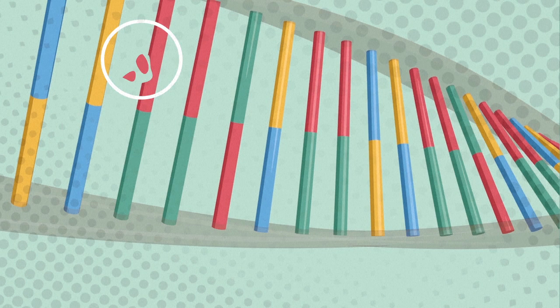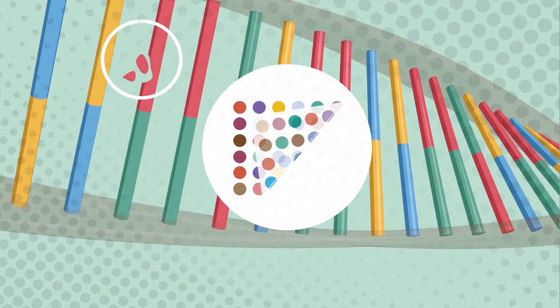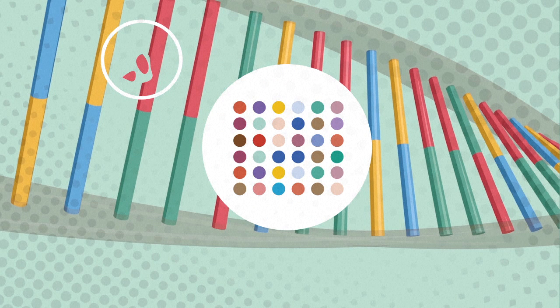Things go wrong when there's a flaw in the code called a mutation. A single misspelling in a gene can cause disorders such as colour blindness or a disease like cystic fibrosis.